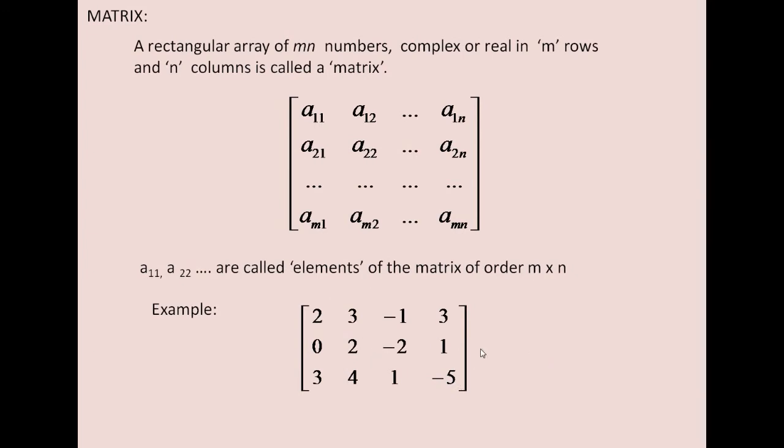This is a matrix of order 3 cross 4. 3 rows are there and 4 columns are there. So you call it as a 3 cross 4 or 3 by 4 matrix.